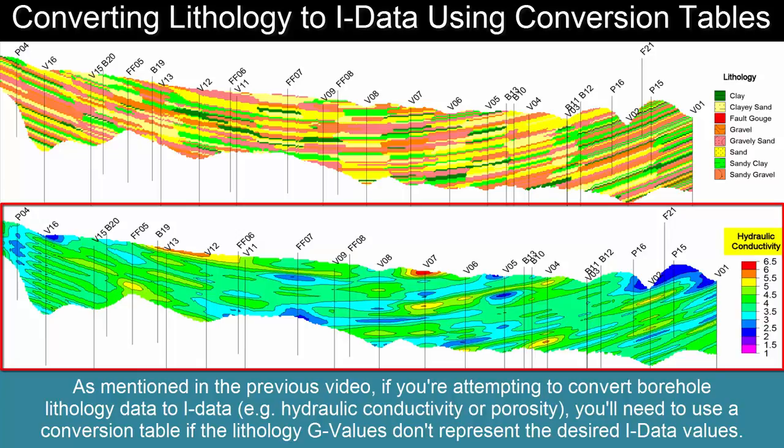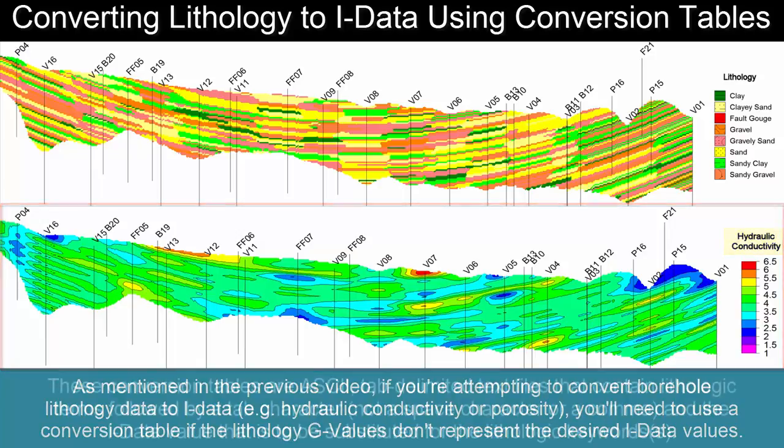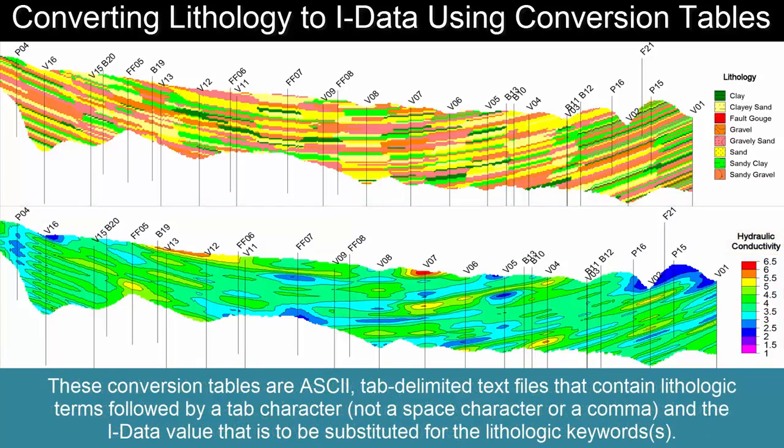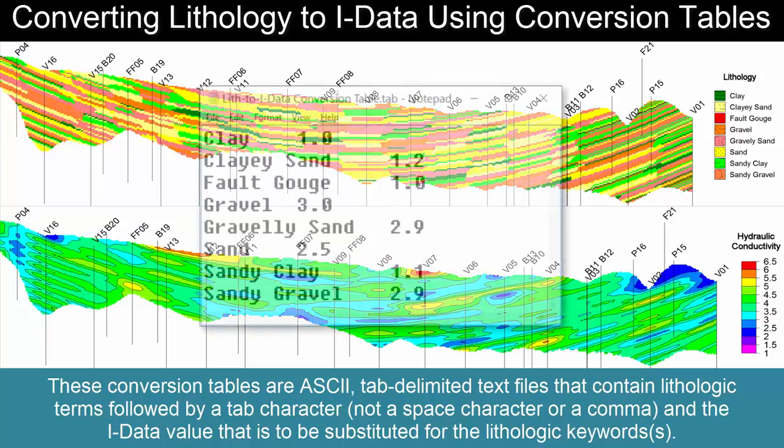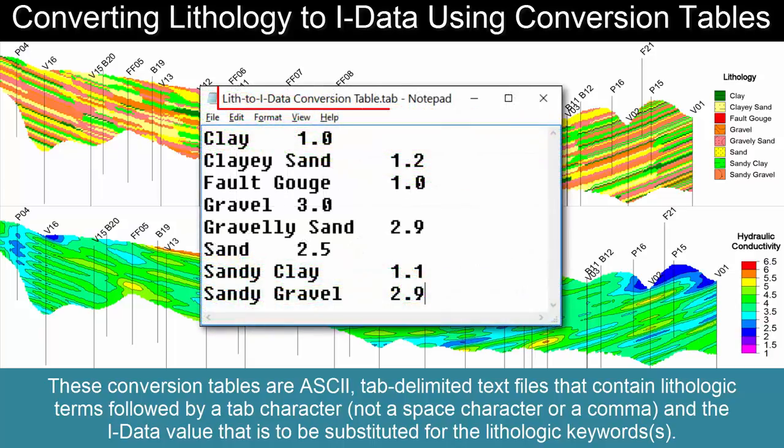These conversion tables are ASCII tab-delimited text files that contain lithologic terms followed by a tab character — not a space character or a comma — and the I-data value that is to be substituted for the lithologic key word or key words.